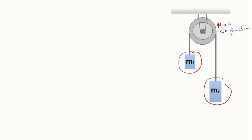We circle each object and look at what pulls and what pushes on it. If I take object m1 — by definition, if the object has mass, it will have a force of gravitation, which we call mg. This mg is always perpendicular to the ground, and it will be m1g. Then m2 is pulling on m1 through the rope — this force I call tension T1.